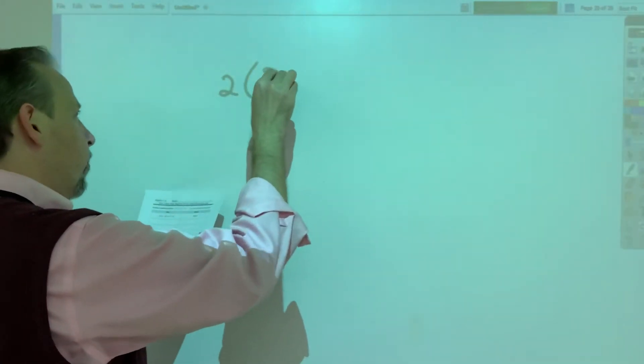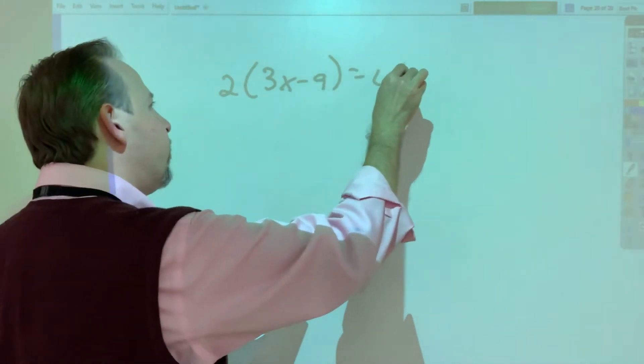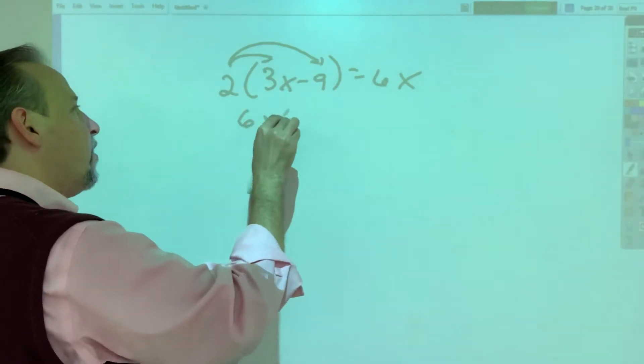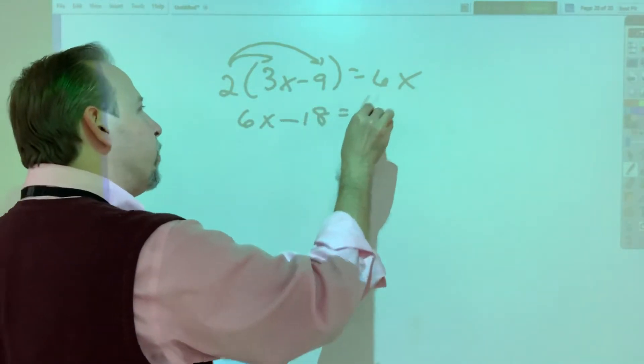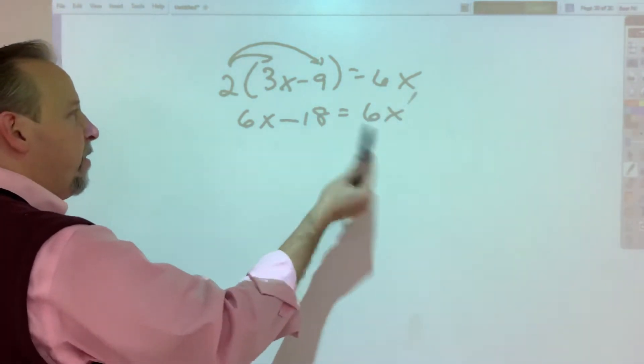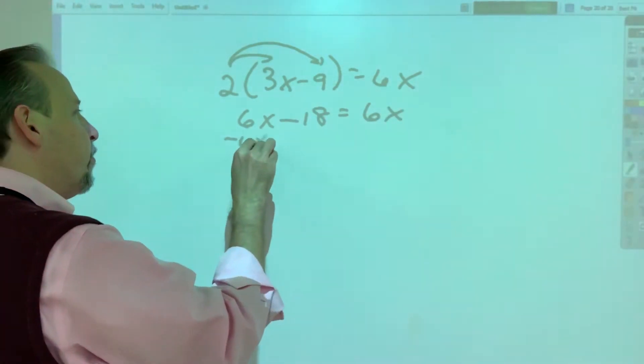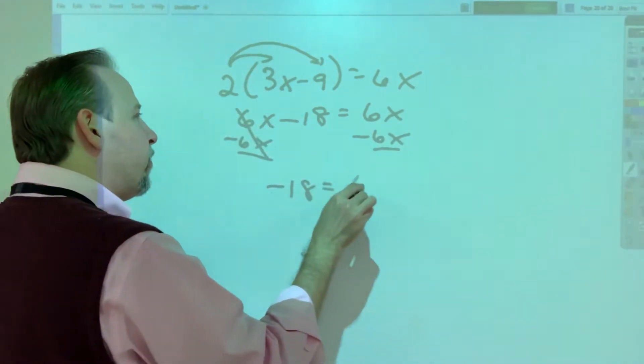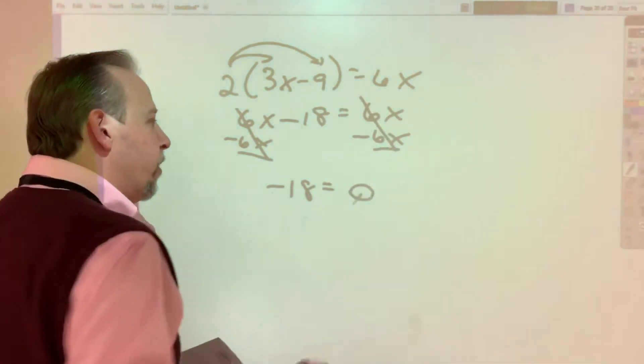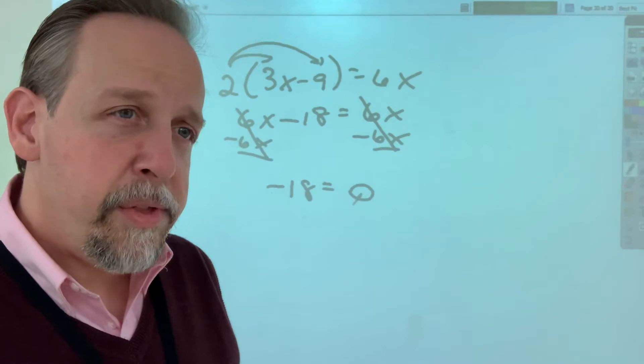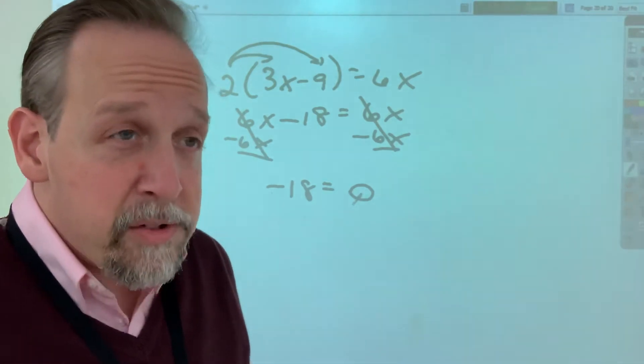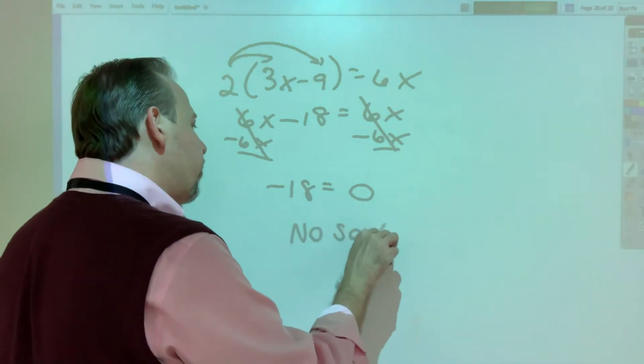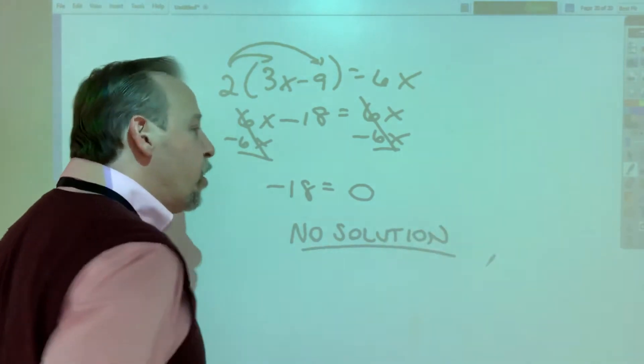Moving on to the next problem. 2 parentheses 3x minus 9 equals 6x. We can distribute. 2 times 3x is 6x minus 2 times 9 is 18 equals over here 6x. I have x variable on both sides, so I'm going to subtract that from both sides. Negative 18 equals, well hey, that cancels also. The number is 0. There's no more variable term, but the resulting values are false. Obviously, negative 18 does not equal 0. That tells us there's no solution. That's a special equation. No solution.